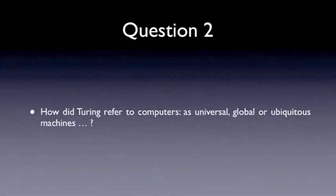Q2. How did Turing refer to computers? As universal, global, or ubiquitous machines?